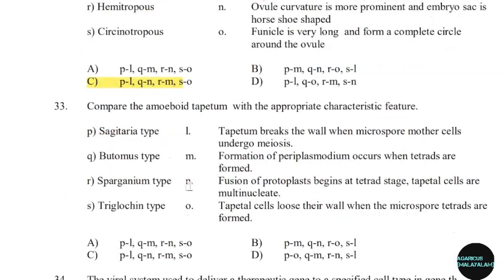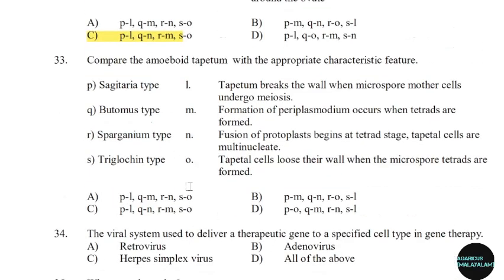33rd question: Compare the amoeboid tapetum with the appropriate characteristic feature. Correct answer: Option D.